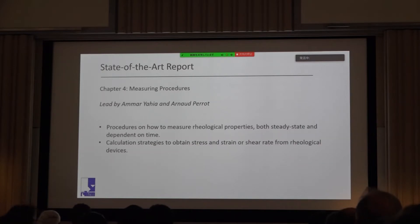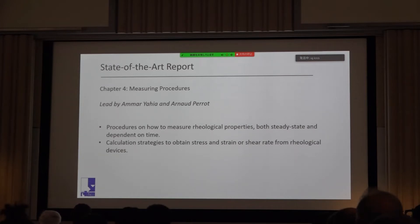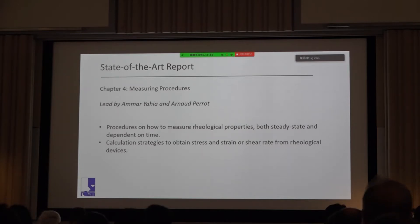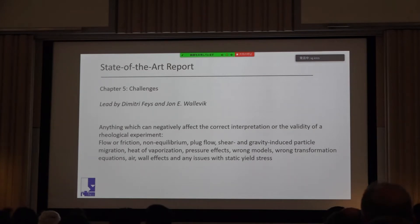Chapter 4, led by Omar, Yaya, and Andrew Perot, describes procedures on how to measure rheological properties — both steady-state (yield stress, viscosity, and non-linearity) and time-dependent properties such as thixotropy and workability loss — plus calculation strategies, because rheometers don't measure stress and shear rate directly. Chapter 5, led by Jorn Wolovic and myself, covers the challenges — what can go wrong. There's quite a bit that can negatively affect the correct interpretation or validity of a measurement, and we think it's very valuable information to discuss.